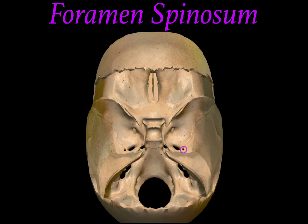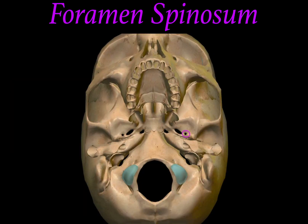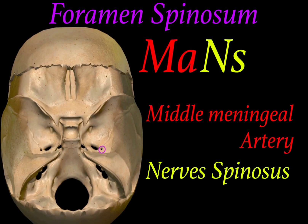Behind foramen ovale we find a small, tiny dot-like foramina which is foramen spinosum — it is the smallest foramen. Foramen spinosum gives passage to MAN'S structures, where MA stands for middle meningeal artery and NS stands for nervus spinosus.